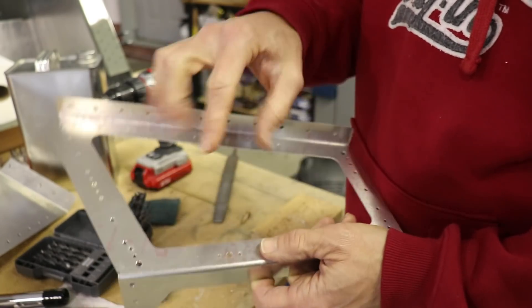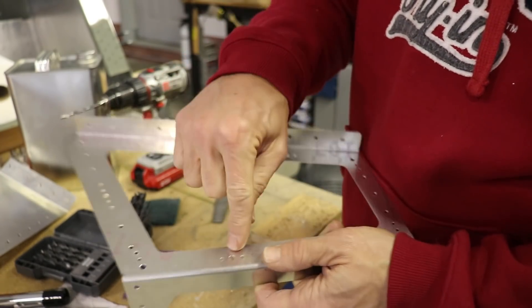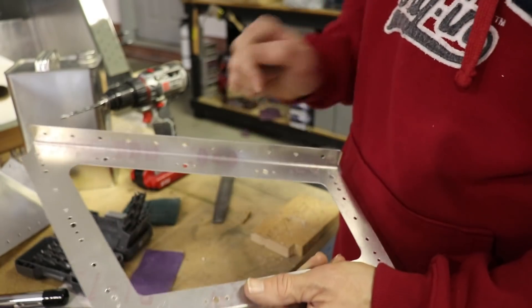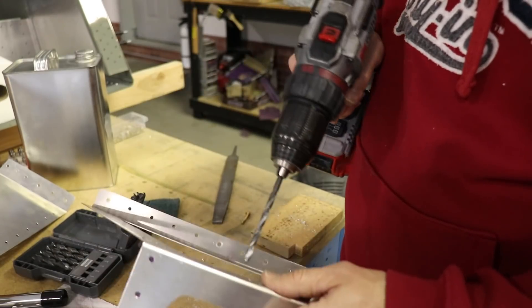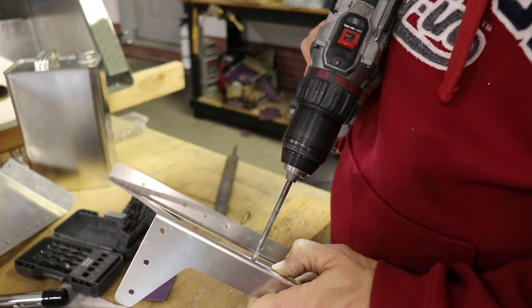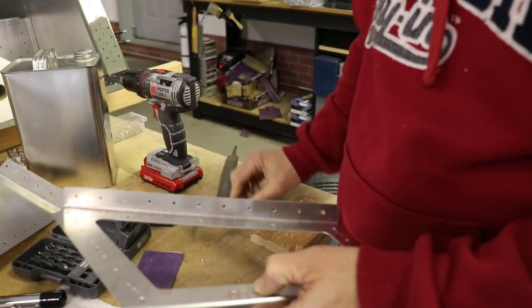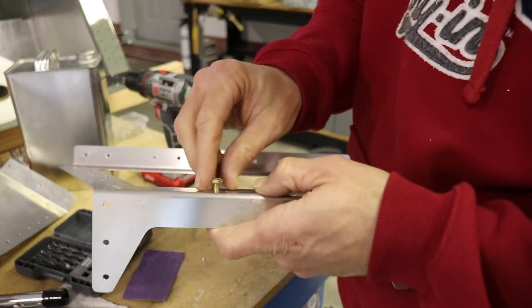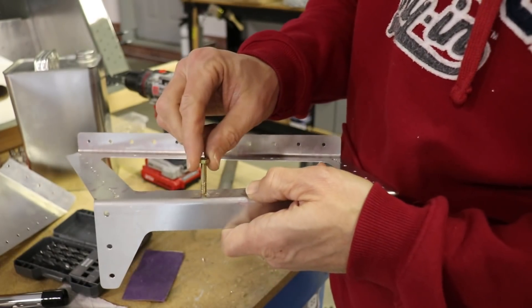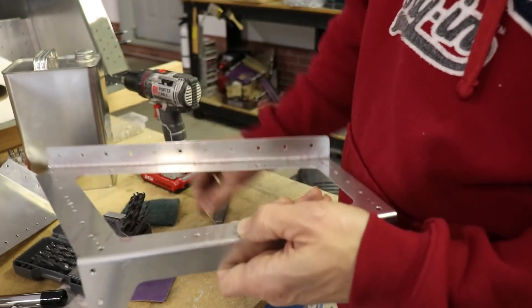So on the aluminum that the nut plate is riveted to, I always open up the center hole one size bigger than three sixteenths. And that just gives the bolt a little room to get in there and it fits a lot nicer that way. So once you actually have your nut plate on here, it'll be a lot easier to actually get your bolt in there.